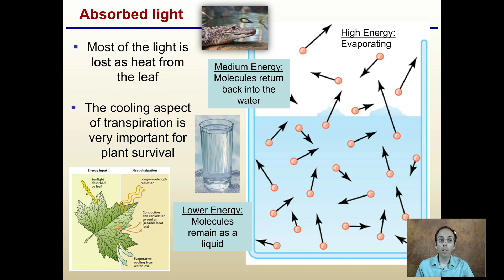Most of the absorbed light is lost as heat from the leaf. That's an interesting note that those leaves are out there receiving light, which is great, they need that to convert sugars, but they're also getting a lot of heat energy. The cooling aspect of transpiration is very important for plant survival. Transpiration is like the plant sweating, you can think of it in that term, where those high energy molecules are being evaporated, reducing the temperature of the leaf so it doesn't burn.